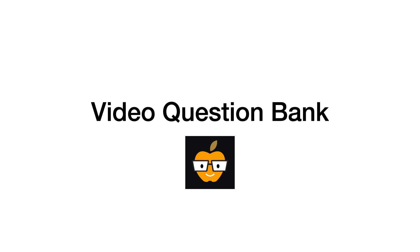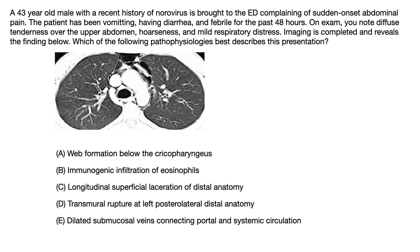Are you ready for another high-yield question? Let's dive right in. A 43-year-old male with a recent history of norovirus is brought to the emergency department complaining of sudden-onset abdominal pain.